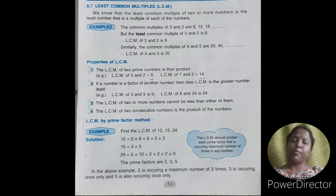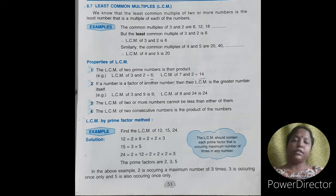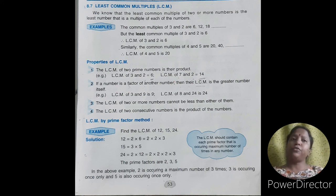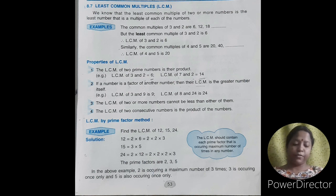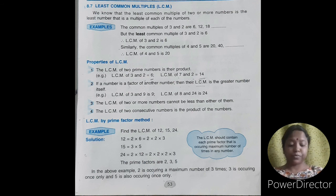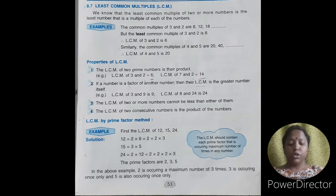The next example is to find out the LCM of 4 and 5. First we have to find out the common multiples of 4 and 5. They are 20, 40, etc. But the least common multiple is 20. So the LCM of 4 and 5 is 20.